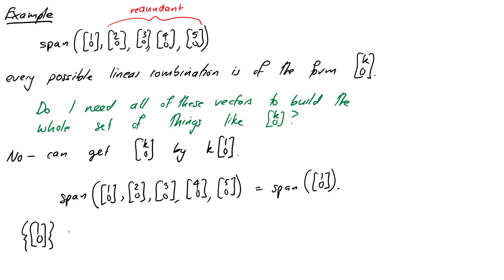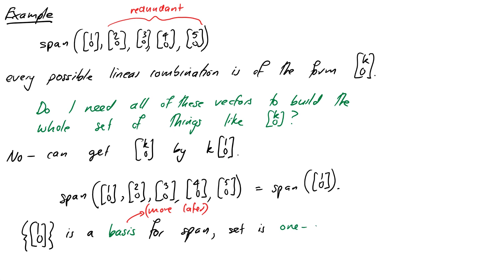So there's a sense in which (1, 0) is a minimal or smallest set that we can build to describe the span we're after. Just to borrow some terminology we'll learn about later, we'd say that (1, 0) is a basis for that span, and we'd also say that the span is one-dimensional because there's only one vector in the basis. But let's not get too far ahead of ourselves — we'll come back to these concepts a little bit later on in the course.